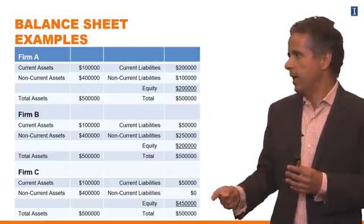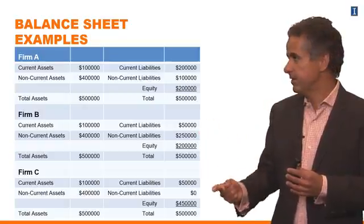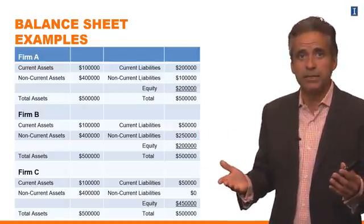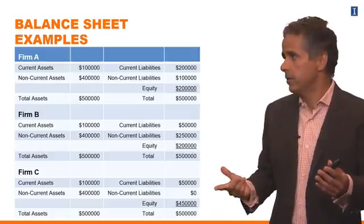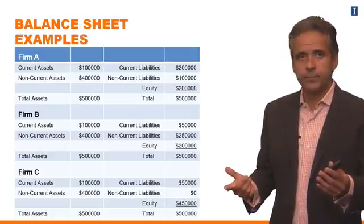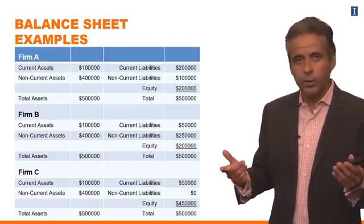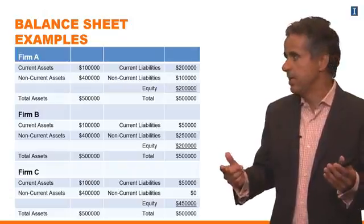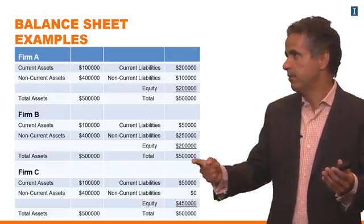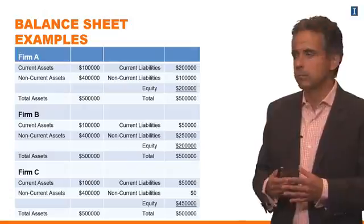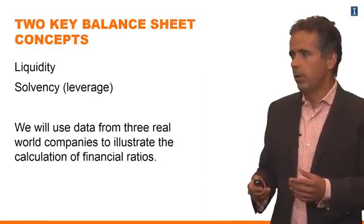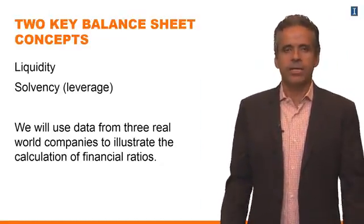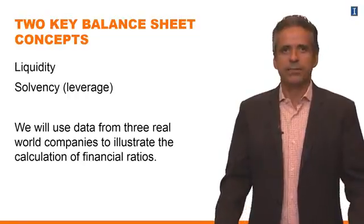Then we look at Firm C. The main difference is that Firm C has fewer liabilities than Firm A and Firm B. So another concept we're going to talk about is solvency, which is going to be a difference between Firm C and the other two firms. These are the key concepts we're going to be talking about: liquidity and solvency.